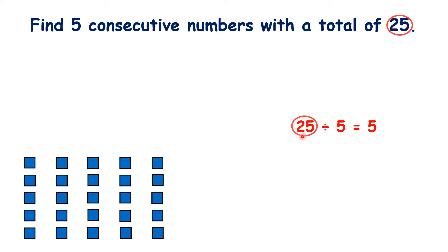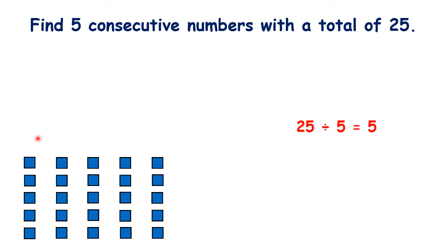We have five blocks in each group because 25 divided by 5 is 5. Our dividend is our total, which for this question is 25. And our divisor is 5 because we want to find five numbers. But our numbers can't be 5, 5, 5, 5 and 5 because these aren't consecutive numbers.